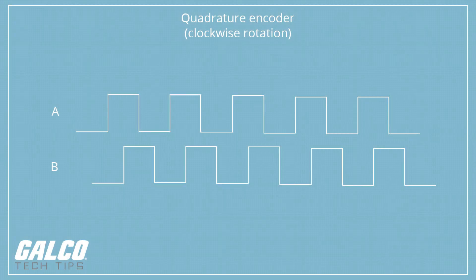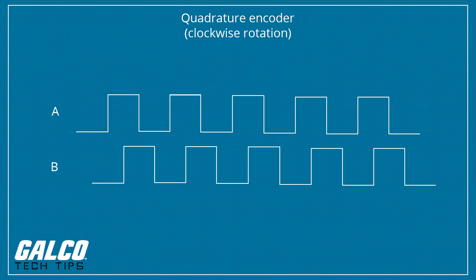An incremental encoder generates a train of pulses which can be used to determine position and speed. An absolute encoder generates unique bit configurations to track positions directly.